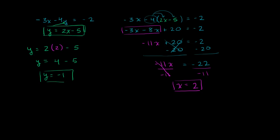And you can verify that it will work in this top equation. If y is equal to negative 1 and x is equal to 2, this top equation becomes negative 3 times 2, which is negative 6, minus 4 times negative 1, which would be plus 4. And negative 6 plus 4 is indeed equal to negative 2. So it satisfies both of these equations.